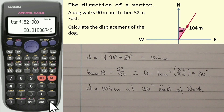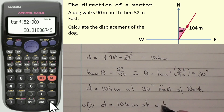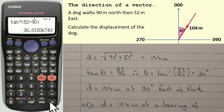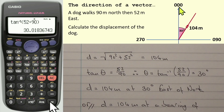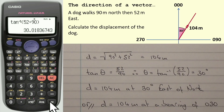Another way to express this direction is as a bearing. Bearings are always written as three digits: north is 000, east is 090, south is 180, west is 270. Since we've measured 30 degrees from north, and north is 000, we do 000 plus 30, giving a bearing of 030. Whichever method you use will be accepted — it is a choice. However, SQA papers increasingly use bearings, so make sure you understand how to express direction as a bearing.